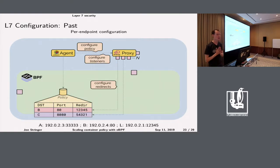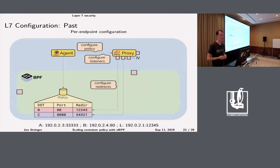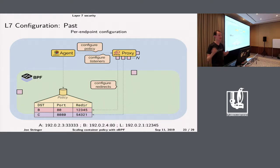Initially, we instantiated the proxy for every single port in our policy and for every endpoint on the node, configuring listeners and sockets, with a lot of coordination between the agent and the proxy. The agent populates a BPF map: given a destination identity and port, redirect to a particular proxy port. This results in a potentially large number of sockets to configure. Every time an endpoint appears on the node, we have to crunch this policy, configure the proxy, coordinate between the agent and proxy, and update the BPF map — with potential failures and all the associated complexity.